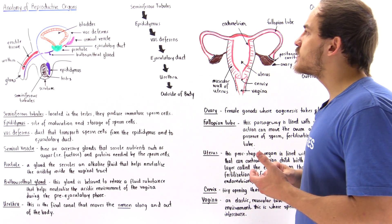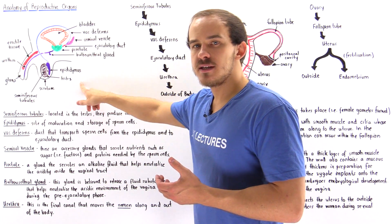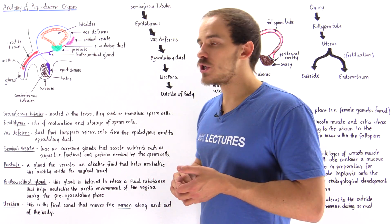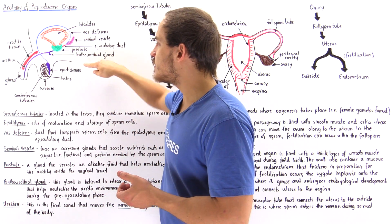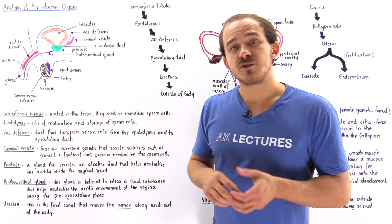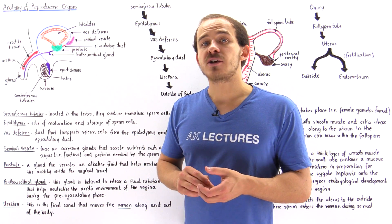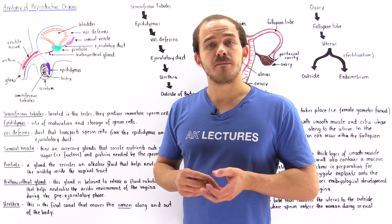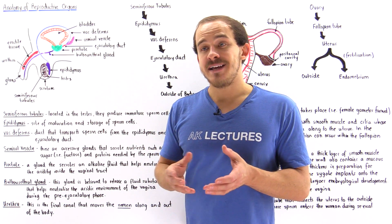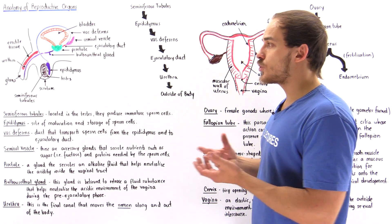Once the sperm cells are formed in the seminiferous tubules of the testes, those sperm cells travel into a highly convoluted tubule section found next to the testes known as the epididymis. The epididymis stores those sperm cells until ejaculation takes place, and it also helps those sperm cells mature into mature sperm cells.